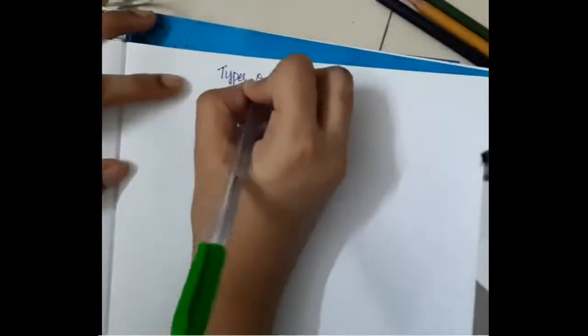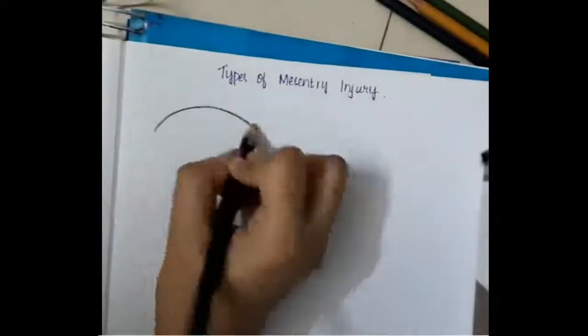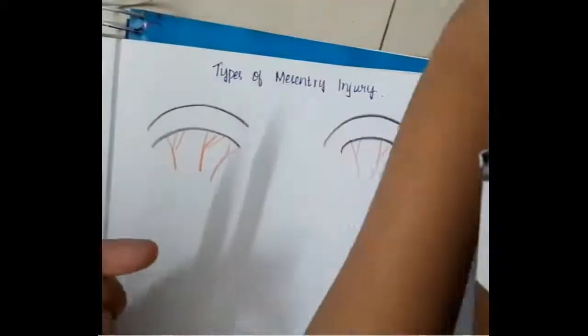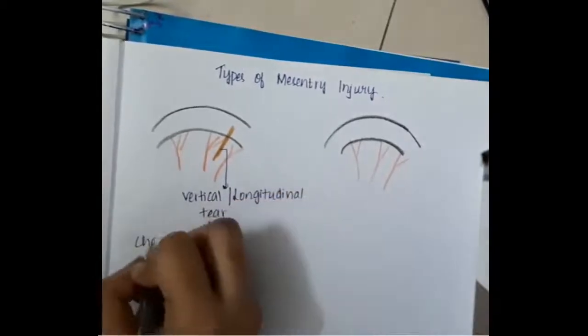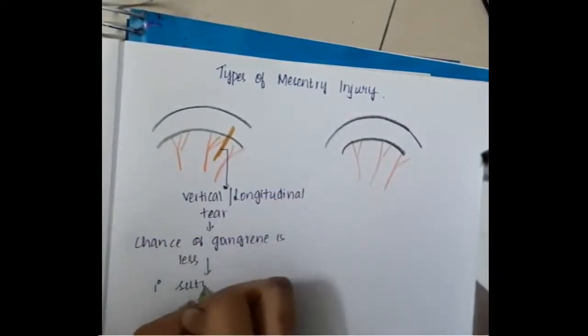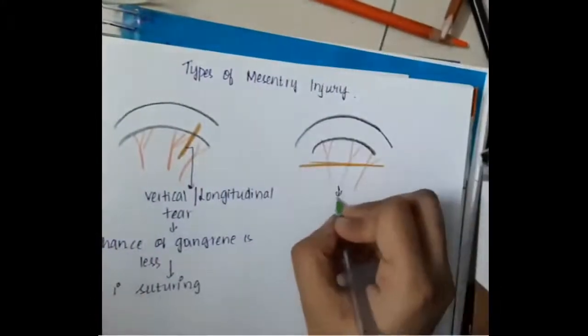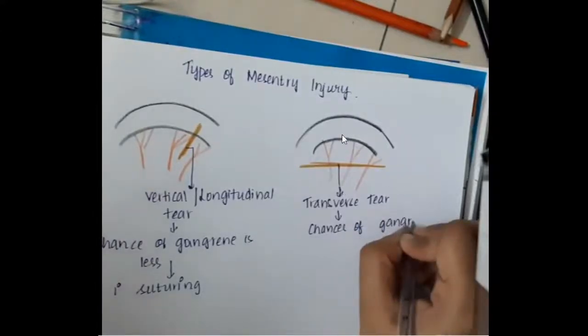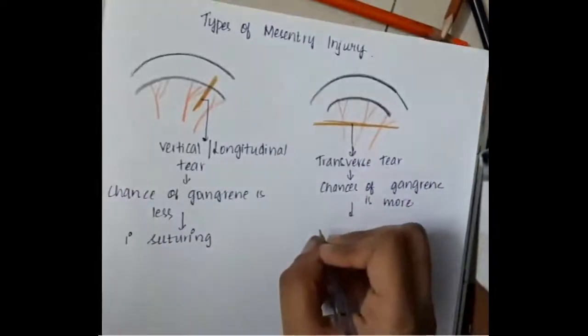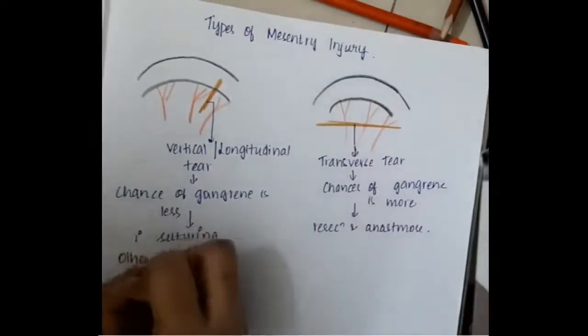There can be increased chances of internal organ injury. We have two types of mesenteric injury. First, there is a longitudinal tear in the intestine — the chance of gangrene is less, and thus you will have to do primary suturing. In the second type, there is a transverse tear of the intestine, and the chances of gangrene are more, so resection and anastomosis should be done.